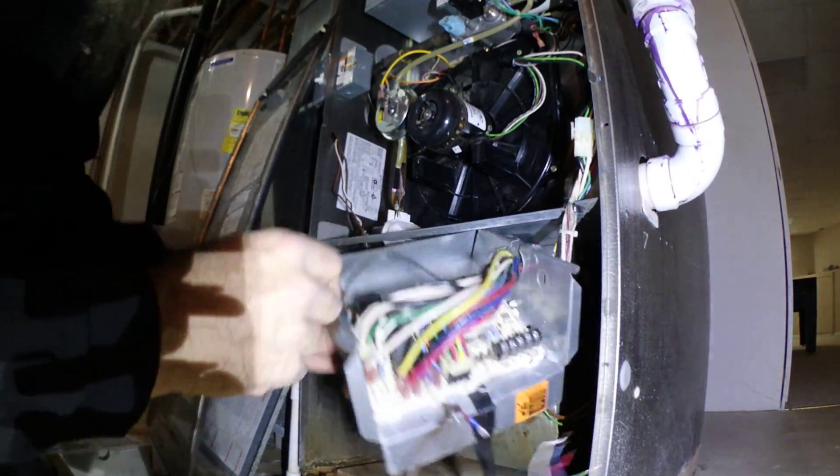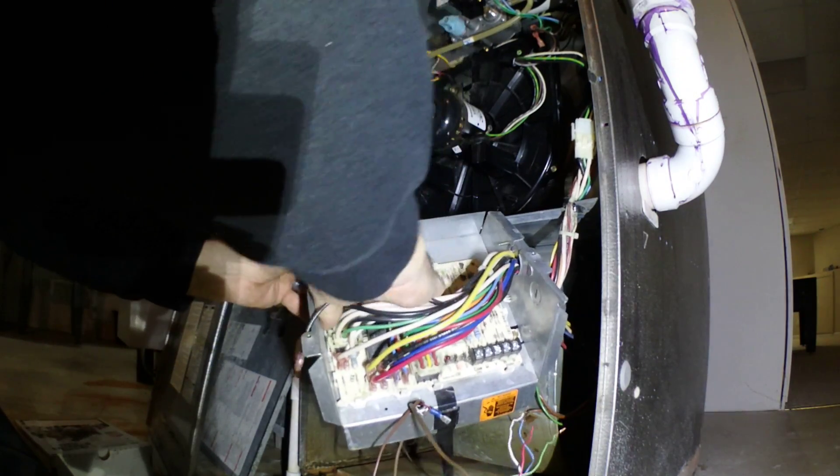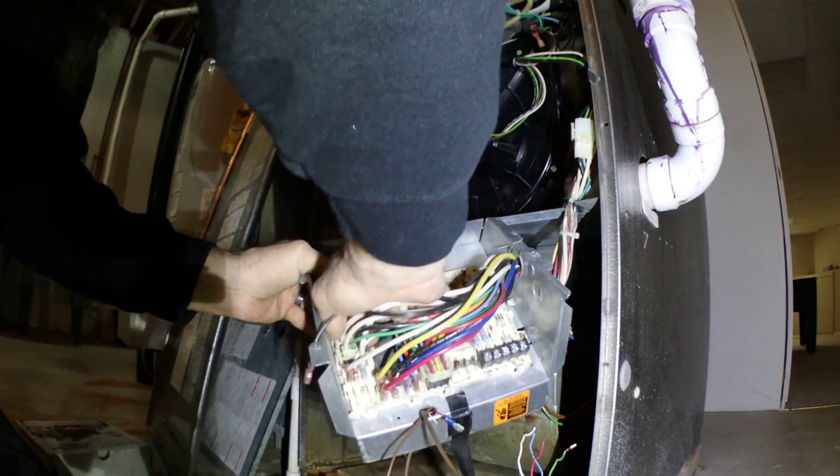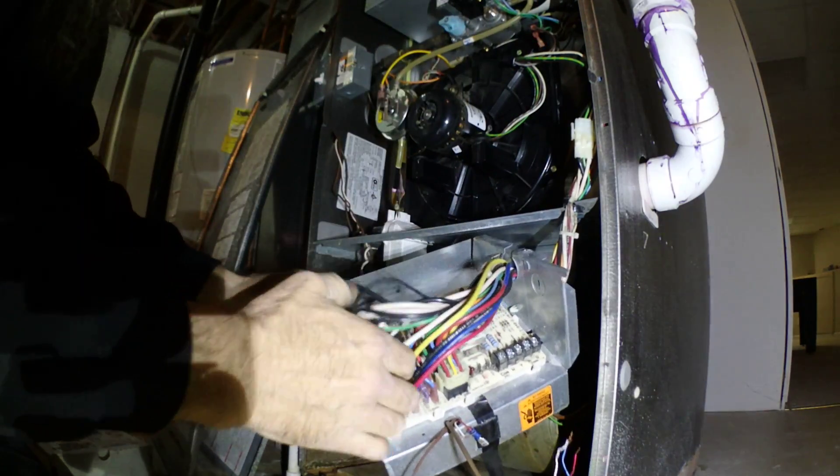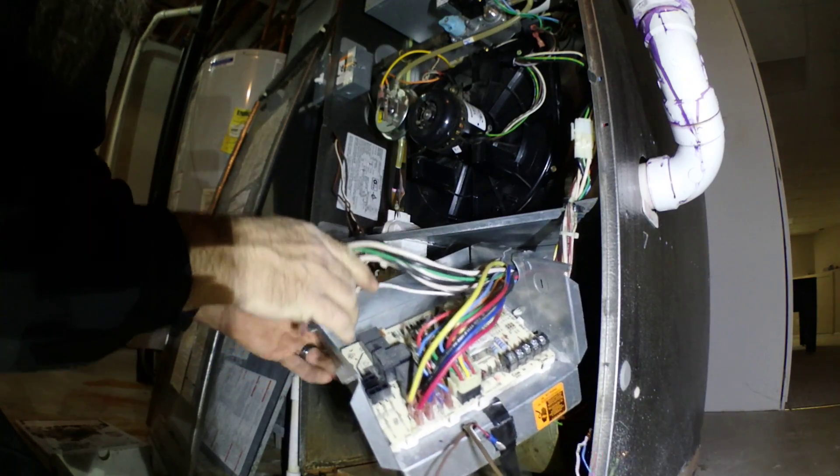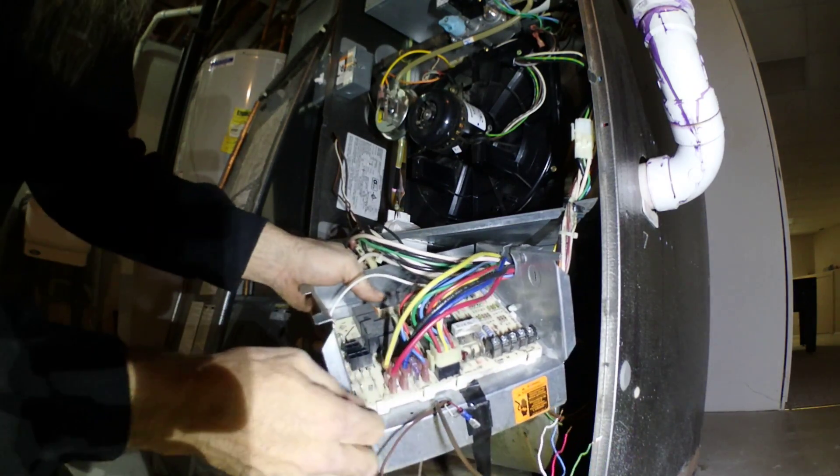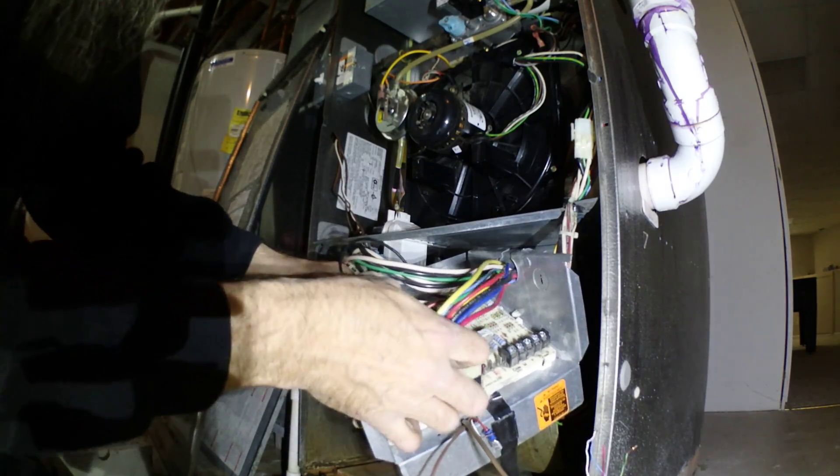Basically, start taking the wires off. We have yellow for heat, black for cooling.